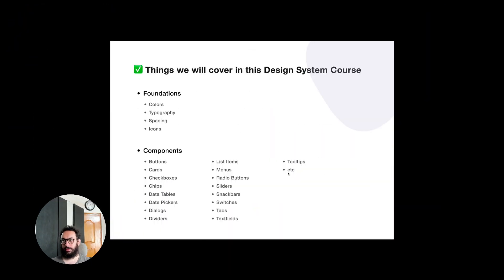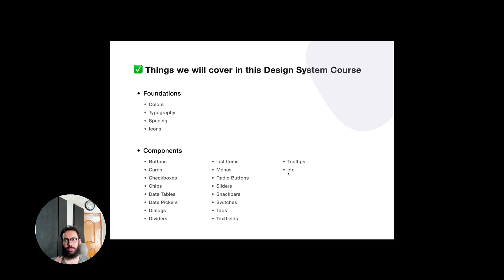So what will we cover in this design system course? We'll cover the foundations: colors — why we choose a particular color scheme, how many variants to create, accent colors, primary and secondary colors. Then typography styles, spacing, and icons. After that, we'll cover components such as buttons, cards, checkboxes, chips, data tables, date pickers, and so forth. Each topic will get its own dedicated step-by-step video. If there's anything missing from the components list that you'd like to see, definitely let me know.